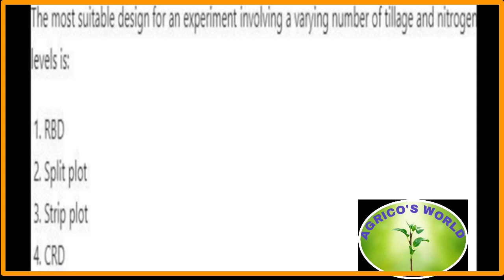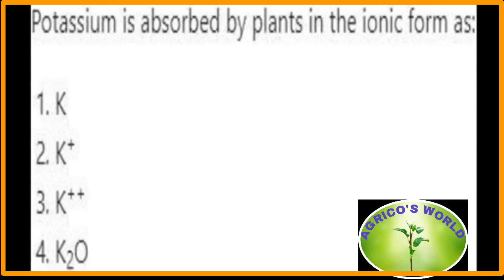The most suitable design for an experiment involving a varying number of tillage and nitrogen levels is the split-plot design. Split-plot is the most suitable design for such an experiment. Potassium is absorbed by plants in ionic form as K⁺.